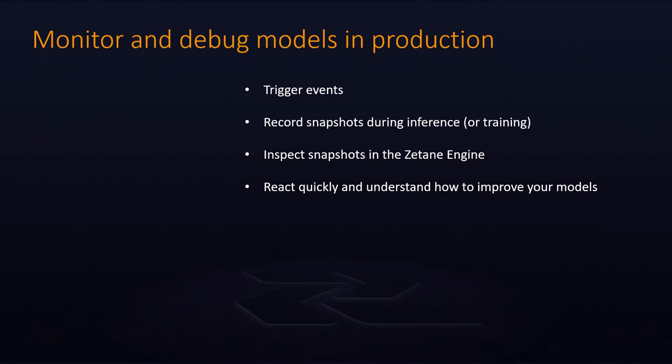When running models in production, you can trigger snapshots based on certain events. These snapshots will record everything about the model at that moment, and later you can inspect those snapshots in the engine and access all the tensors and everything that was happening at that moment. This will allow you to react quickly or understand how to improve your model further.